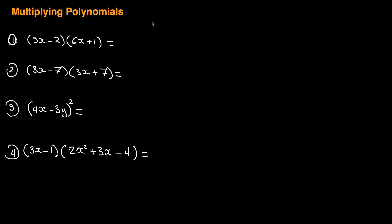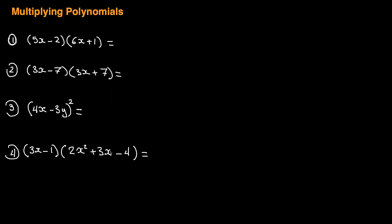Hello, it's Sami. We are continuing with Math 10, and today it's multiplying polynomials. We're looking at multiplying a binomial by a binomial — binomial means two terms — and also squaring a binomial, and multiplying a binomial into a trinomial.